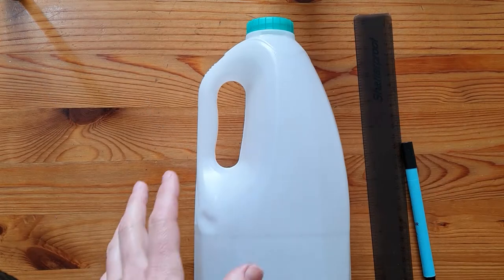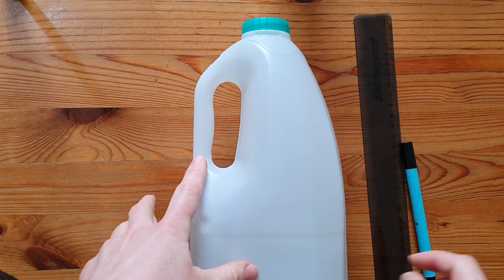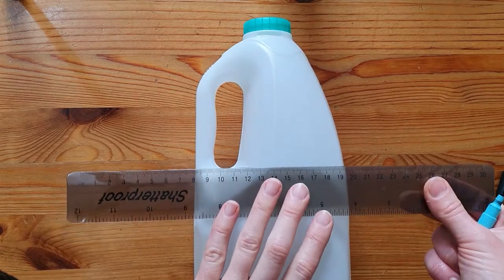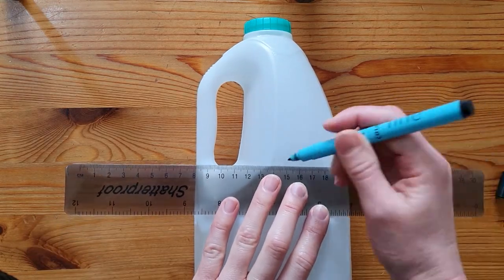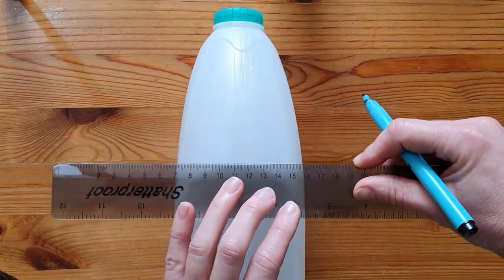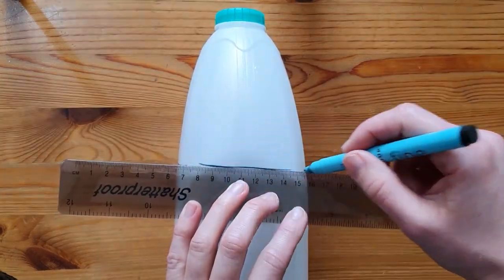Start by using a ruler to mark the base of your elephant. Draw a line at the bottom of the handle. Then turn your bottle around and draw more lines which are roughly level with each other.